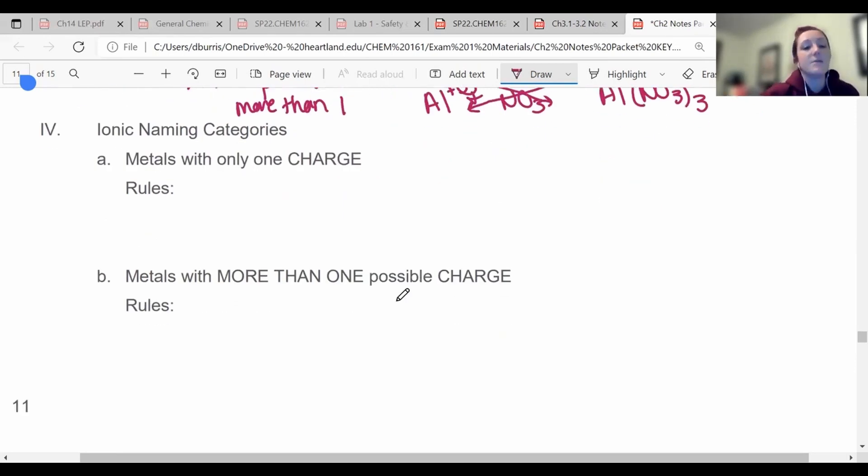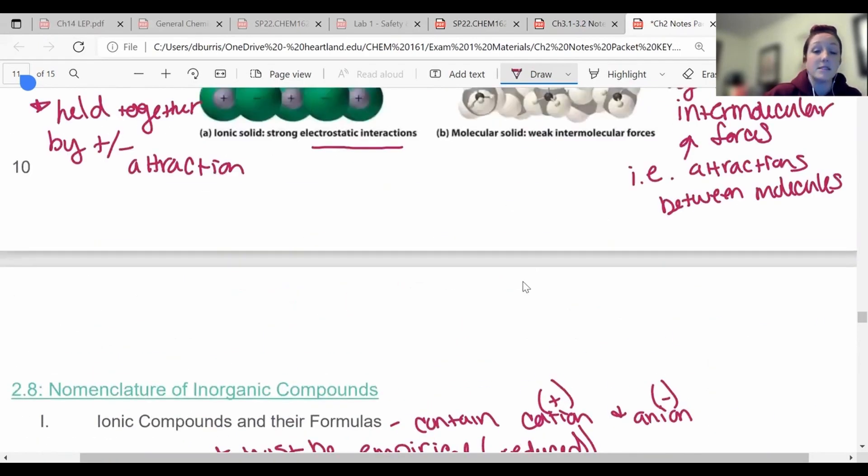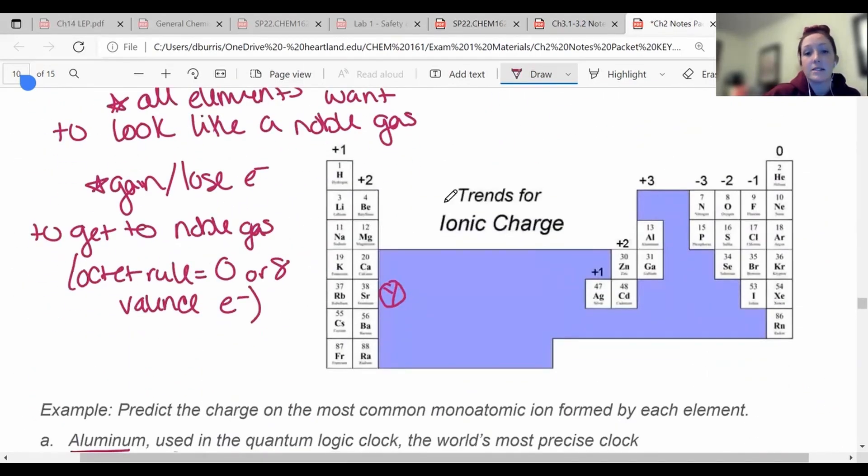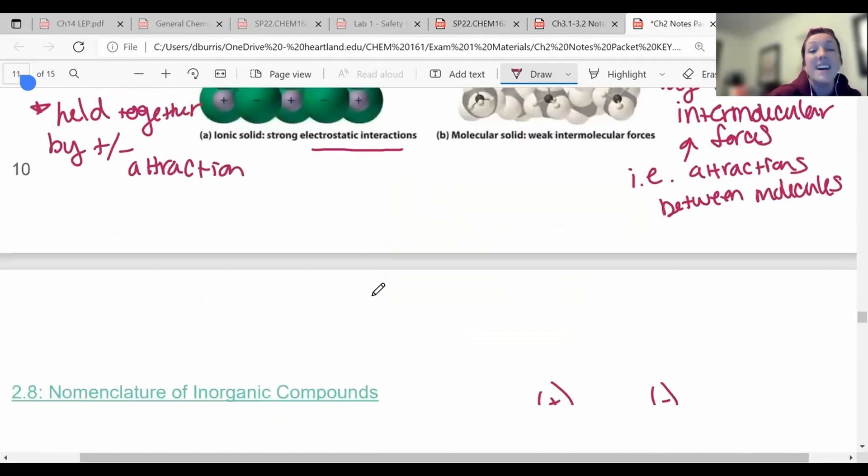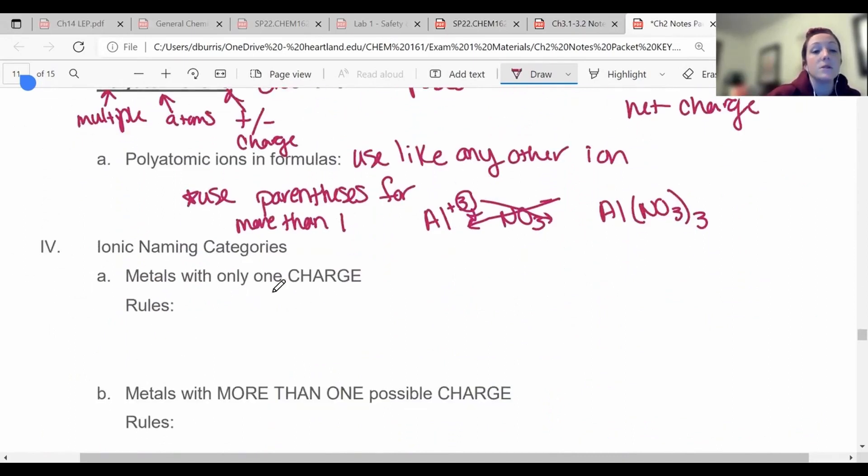Okay, so onto the naming rules. There's a couple different categories. There's metals with only one charge. That's the metals essentially that are listed in this periodic table right here. So things that don't have different charges. Now all the blue stuff, they can have multiple charges. So these guys have specific charges all the time, and they are super easy to name. So metals with only one charge, which are mostly main group metals, so like the A's.